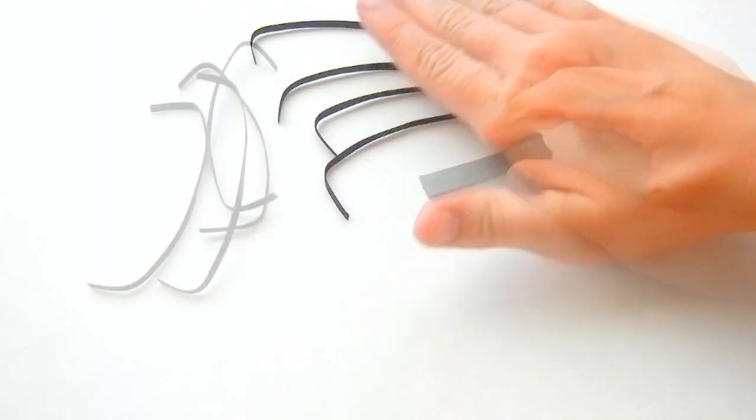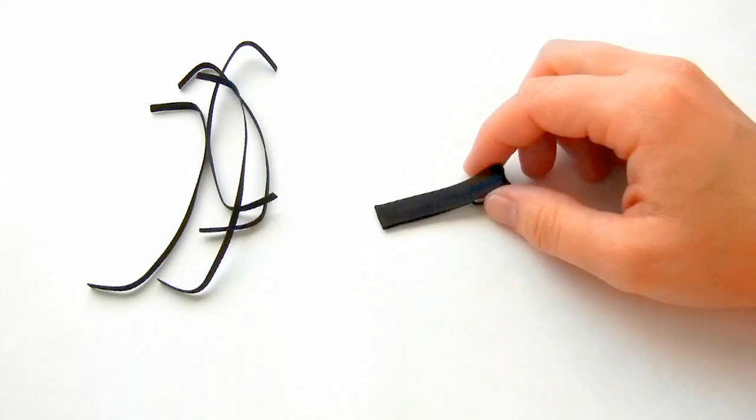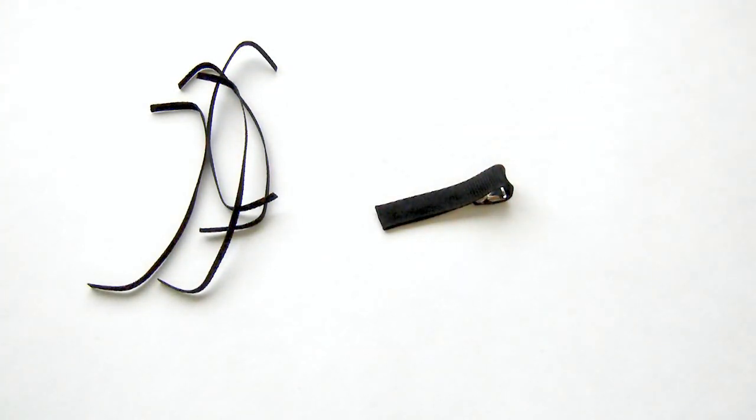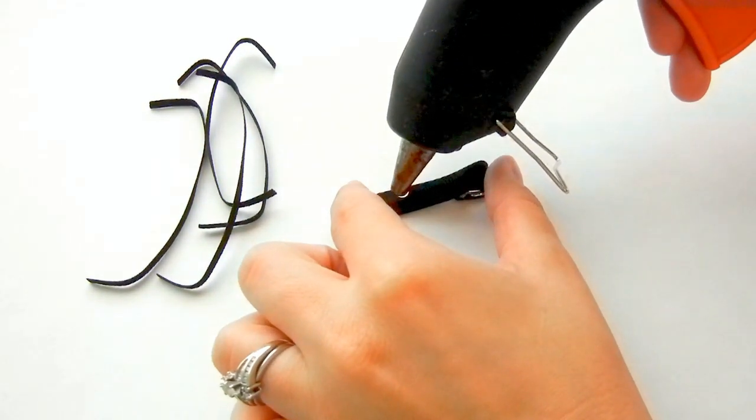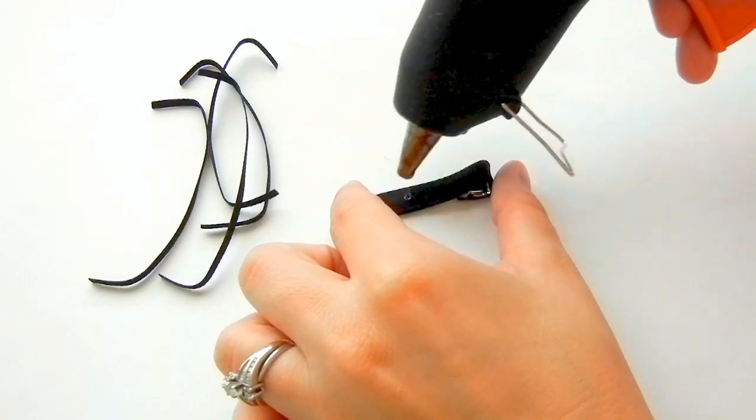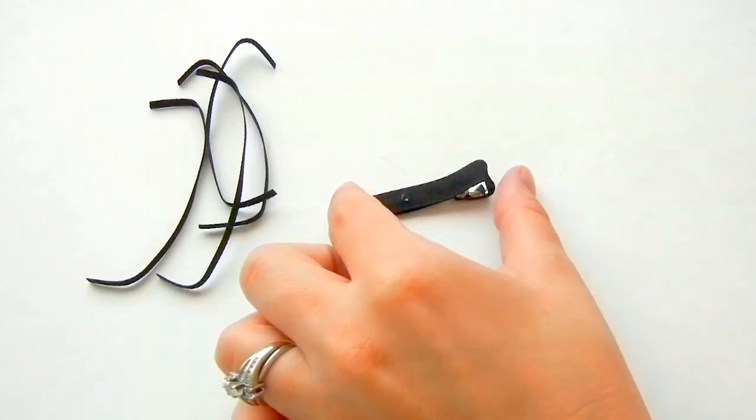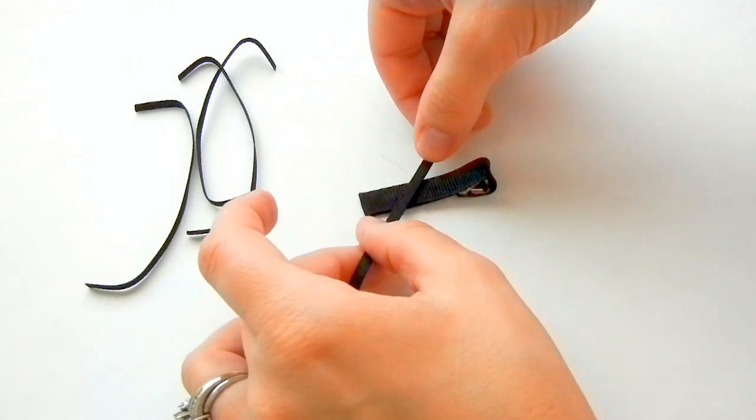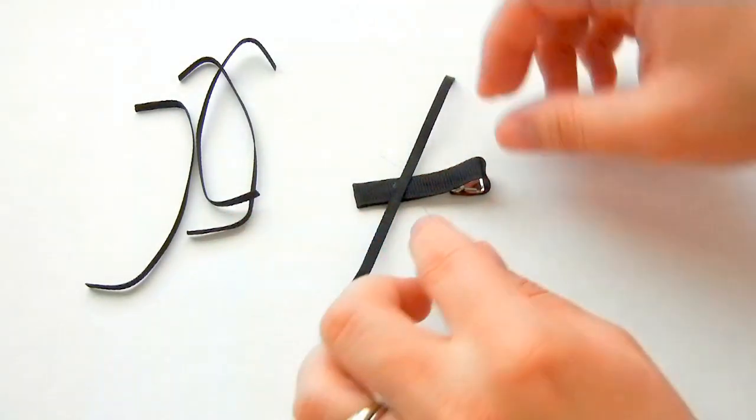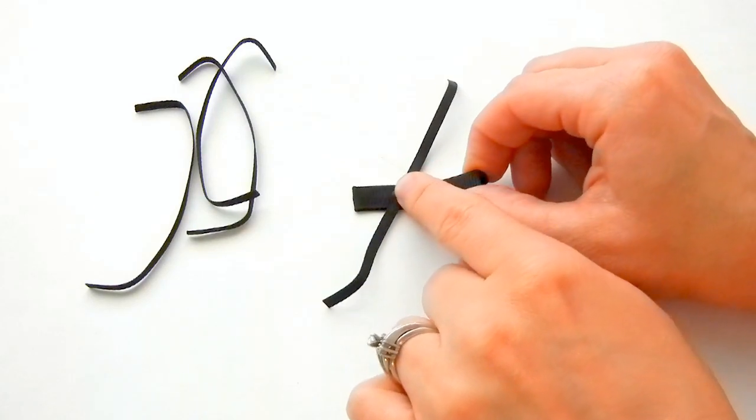Now we're going to glue it onto our clip. Have your lined clip and your spider legs ready as well as your hot glue gun. Take your clip and then place just a dab of glue in the center. Then take one of your spider legs and we're going to make an X.